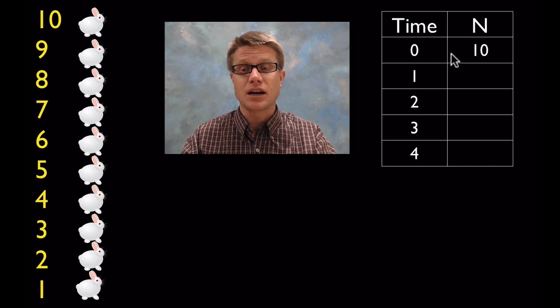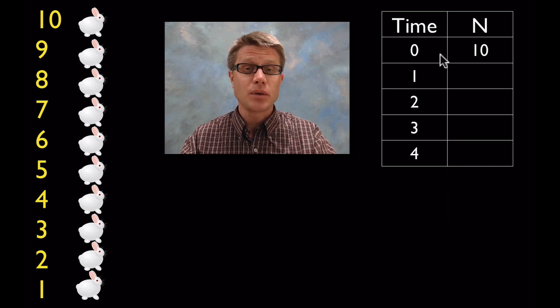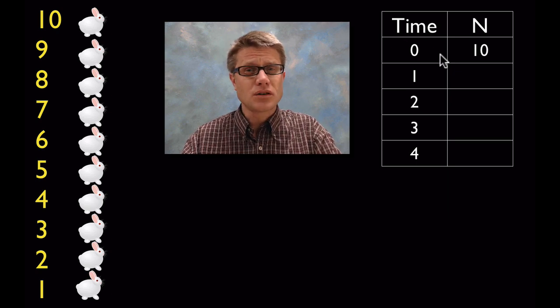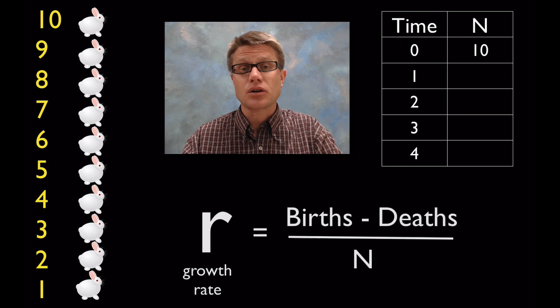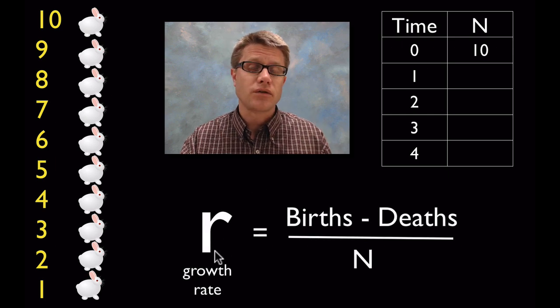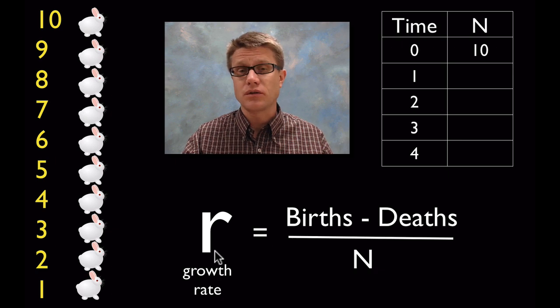So we have 10 rabbits at time 0. Now that population is either going to increase, it's going to decrease, or it's going to stay the same. And what things are determining that? It's going to be our growth rate. And so this is the second letter you should remember. And that's r. r is going to refer to how much it's changing over time.